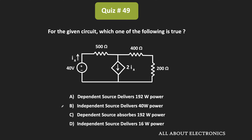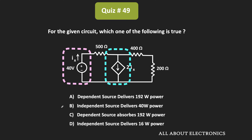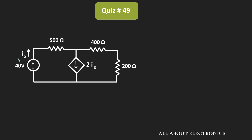Hey friends, welcome to the YouTube channel All About Electronics. So in this question, we have been given a circuit, and we have been asked to find which one of the following options is the correct one. Basically, we need to find out the power that is being absorbed or delivered by the independent and the dependent sources. To find that, first let us find this current Ix and the voltage at this node, which we'll call Vx. By applying KCL at this node, we can easily find Vx and Ix.